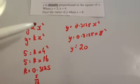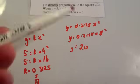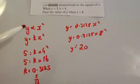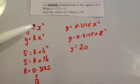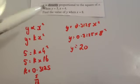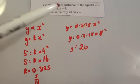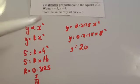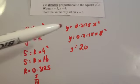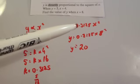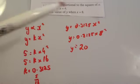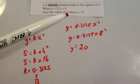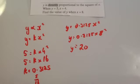It follows the same procedure. Start with whatever information you're given and write it with a proportional sign. Replace the proportional sign with equals K times the expression. Use the pair of values to work out K, put K into the formula — in this case Y equals 0.3125 X squared — then use the other information to find the missing value.